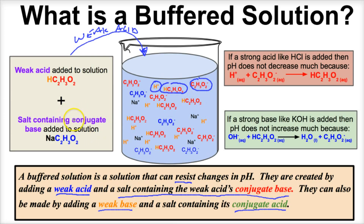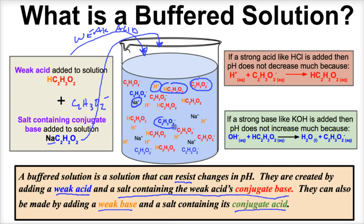Furthermore, if we add a salt containing the conjugate base — keep in mind that the conjugate base of this weak acid is simply C2H3O2-. If we bond that to sodium, we have sodium acetate: a salt containing the conjugate base. When we put this in our water, it's going to dissociate, giving us sodium ions and acetate ions floating in the water. So a buffered solution consists of two parts: the weak acid, and the weak acid's conjugate base.